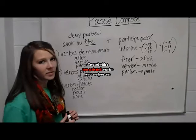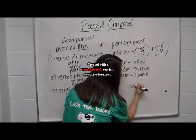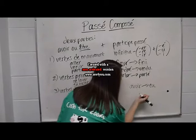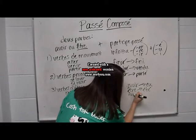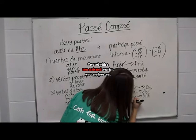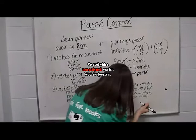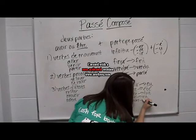One last thing to remember for the passé composé is the irregular past participles. Some examples of these are avoir, which becomes eu; être, which becomes été; faire, which becomes fait; voir, which becomes vu; and prendre, which becomes pris.